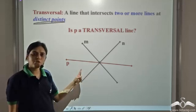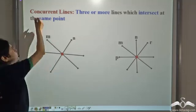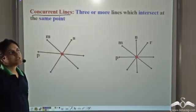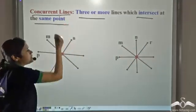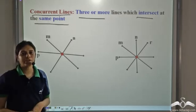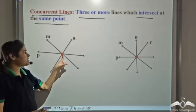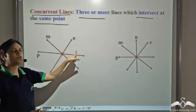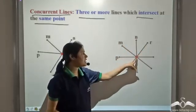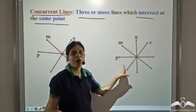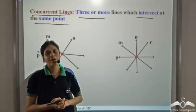Then what are such lines called? Such lines are called concurrent lines. If three or more lines intersect at a point, those lines are called concurrent lines. In this case, P, M, and N intersect at this point, so these three are concurrent lines. P, M, N, and R intersect at this point, so these four are concurrent lines. Concurrent lines are three or more lines which intersect at a single common point.